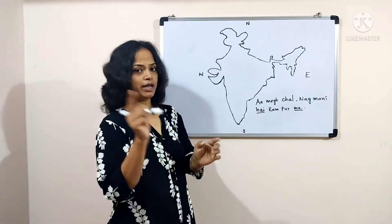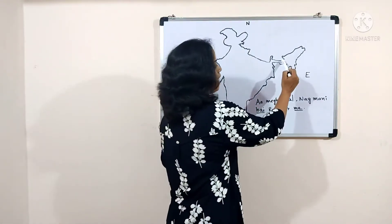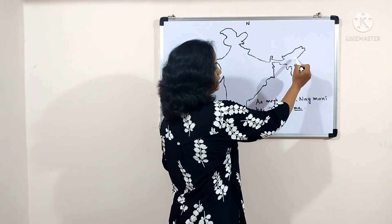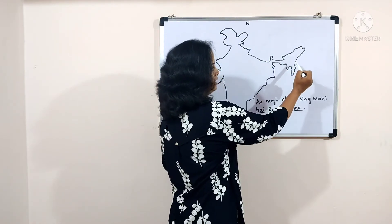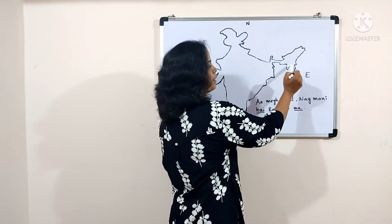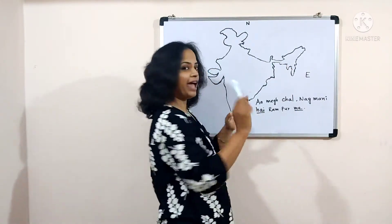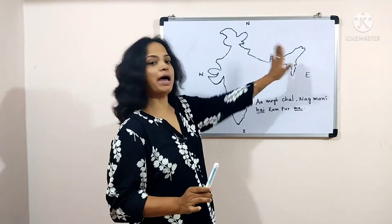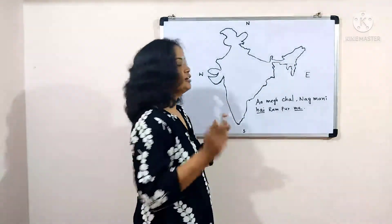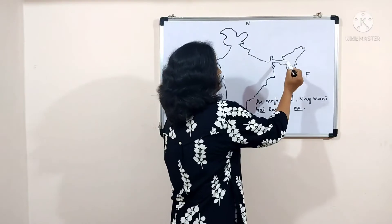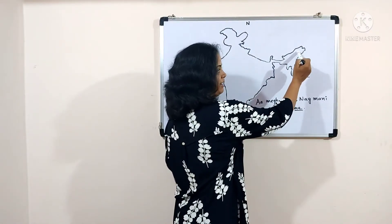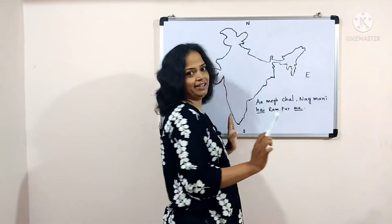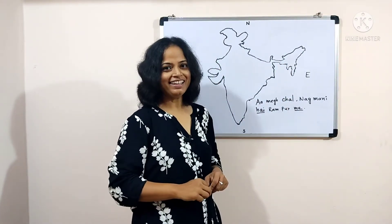So now here is how we are going to practice: A, Meg, chal, nag, mani, hain, ram, poor, meh. Note that 'hain' and 'meh' we will not place on the map. So once more: A, Meg, chal, nag, mani, hain, ram, poor, meh. Is that okay?